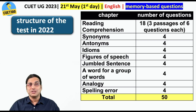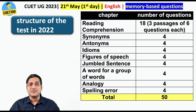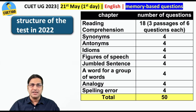This was the structure of the English language test last year: synonyms 4 questions, antonyms 4 questions, idioms 4 questions, reading comprehension 18 questions, figures of speech 4 questions, jumbled sentences 4 questions, a word for a group of words 4, analogy 4, spelling error 4. Out of these 50 you needed to attempt 40 in the given 45 minutes.